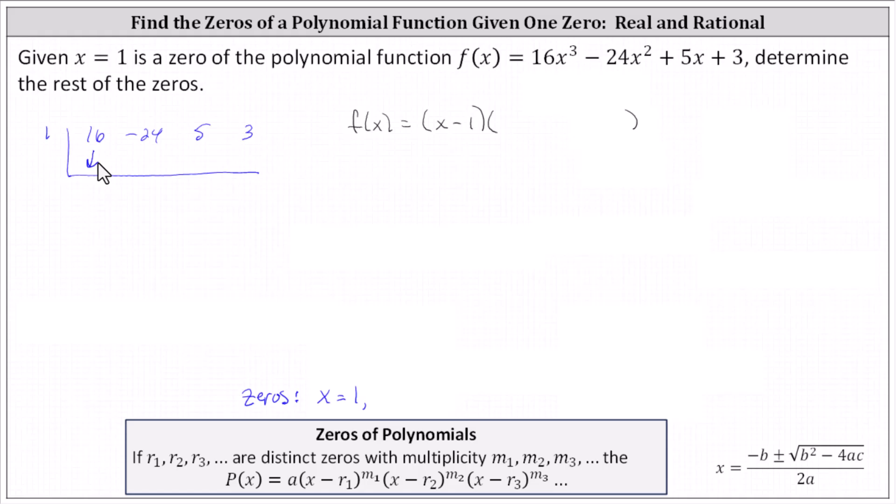To begin, we bring down the 16, then multiply by one. 16 times one is 16. And then we add, negative 24 plus 16 is negative eight. Multiply by one, negative eight times one is negative eight. Add, five plus negative eight is negative three. Multiply by one and add. And notice we do get a sum of zero, indicating the remainder is zero.